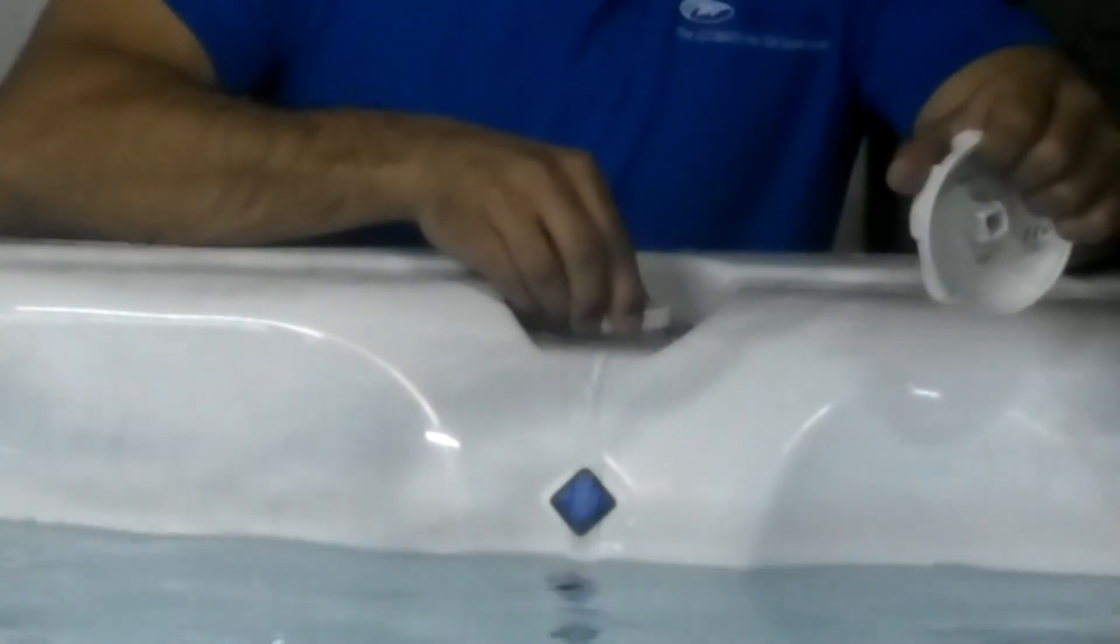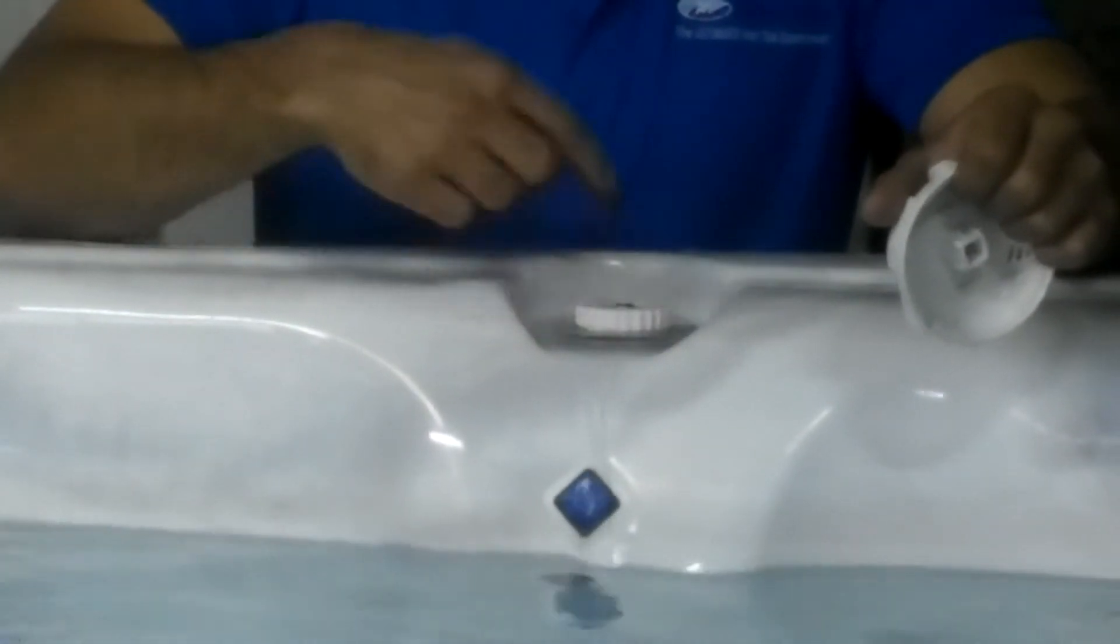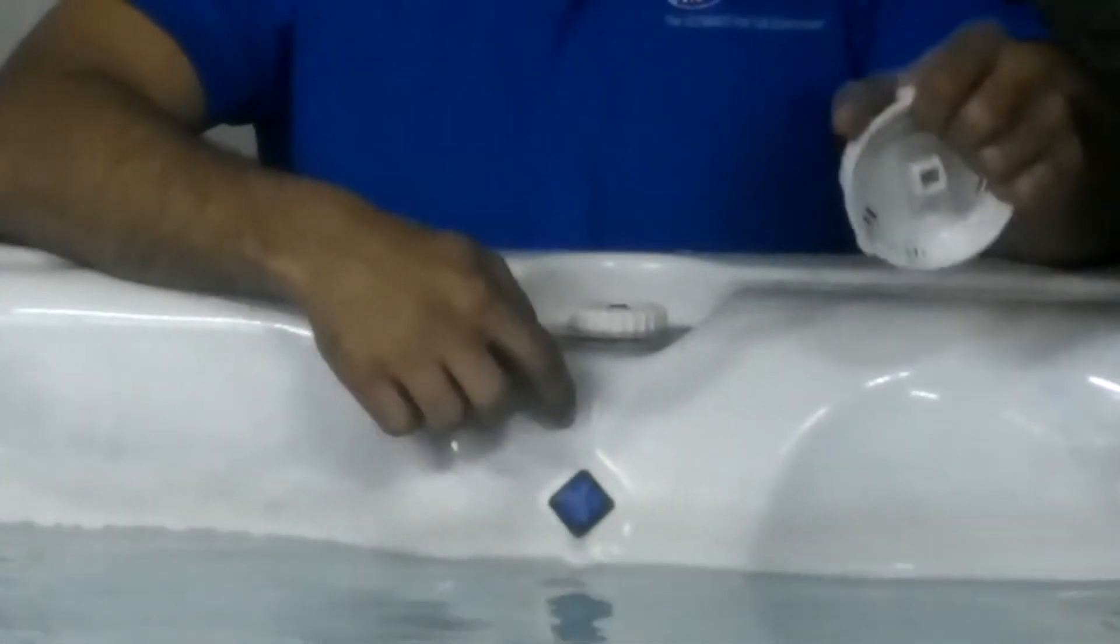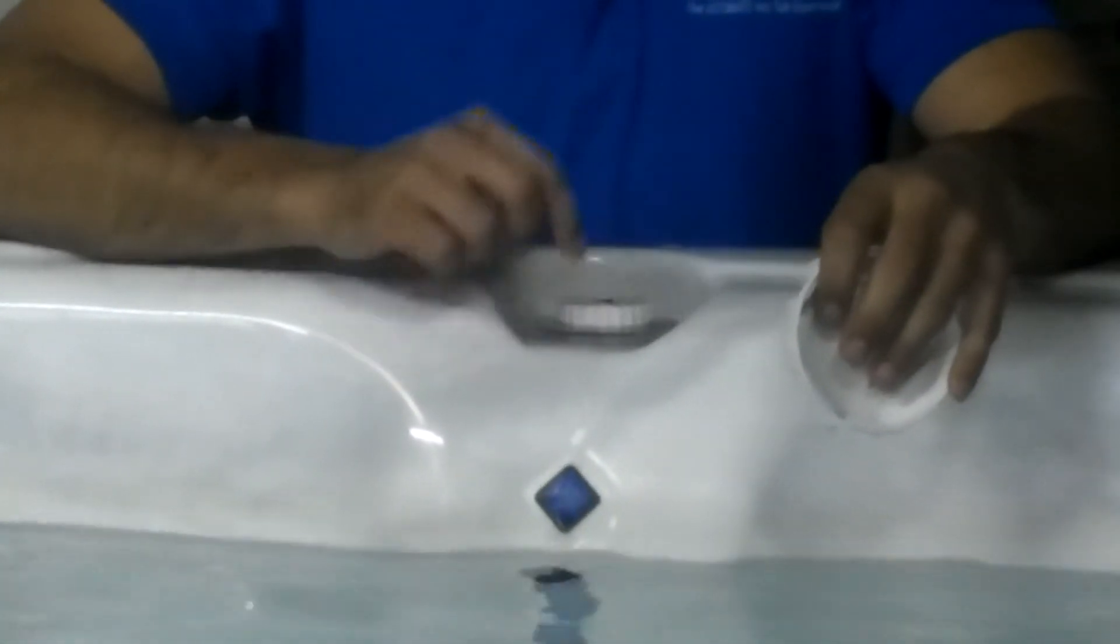What's happened is this valve has become loose over time and it's not pressing the O-ring down tight, and it's causing a little bit of water to leak. This is a super simple fix.